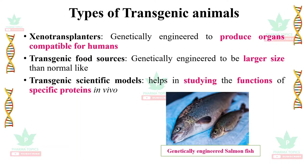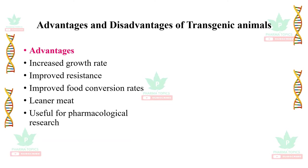Transgenic scientific models help in studying the functions of specific proteins in vivo. The advantages of transgenic animals include: increased growth rate, improved resistance, improved food conversion rates, leaner meat, and usefulness in pharmacological research.